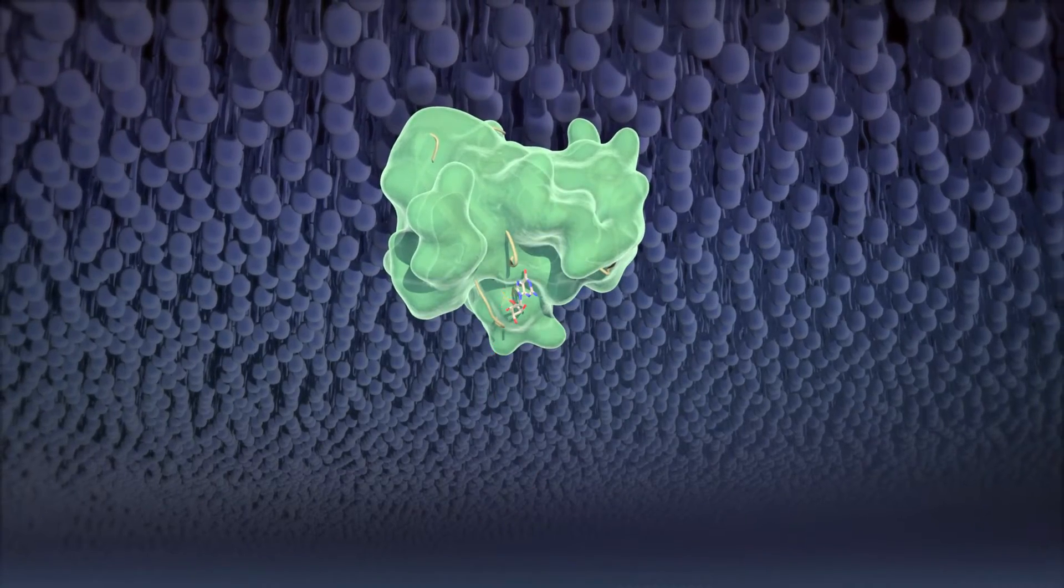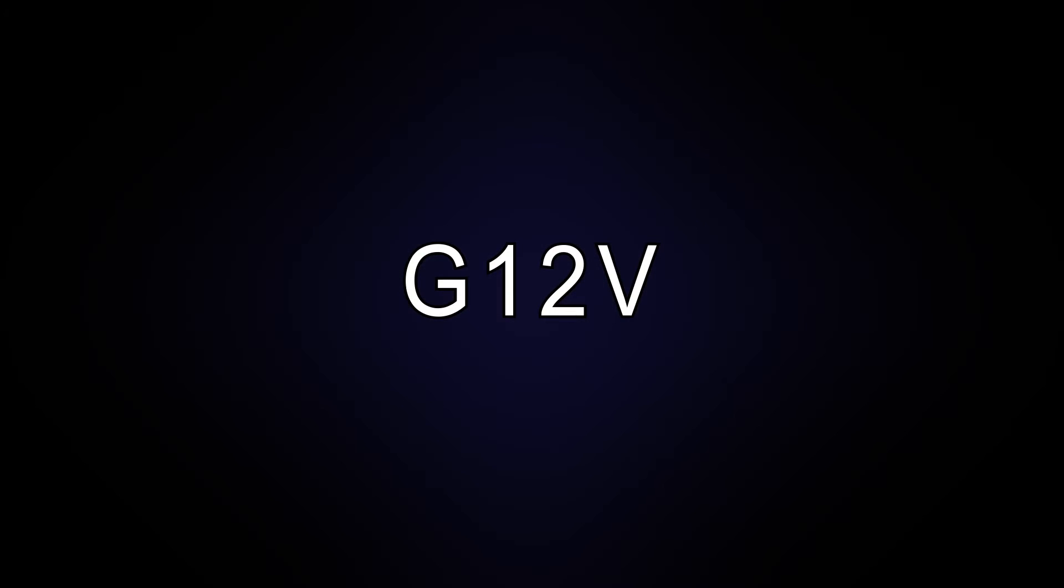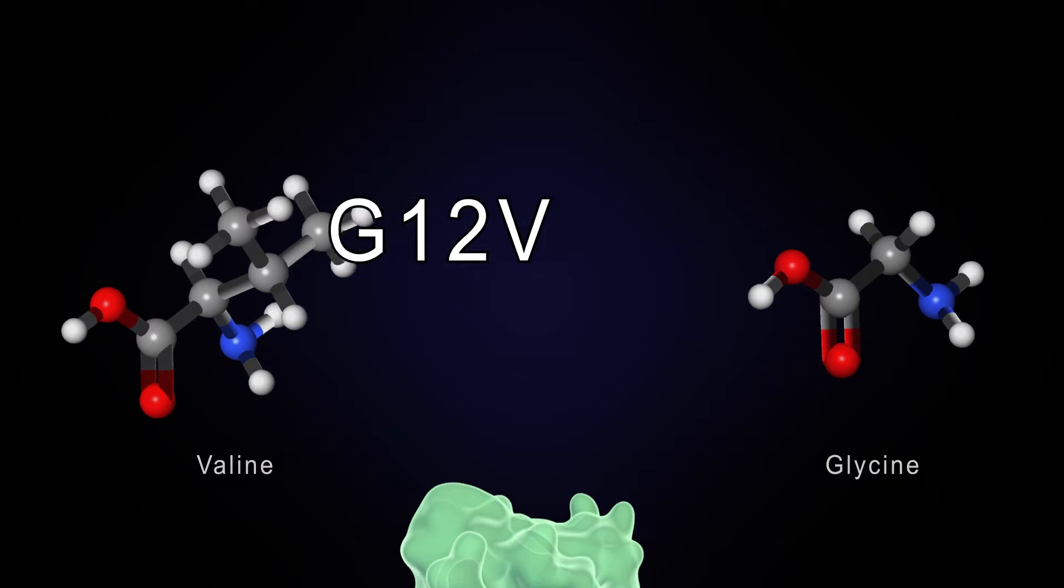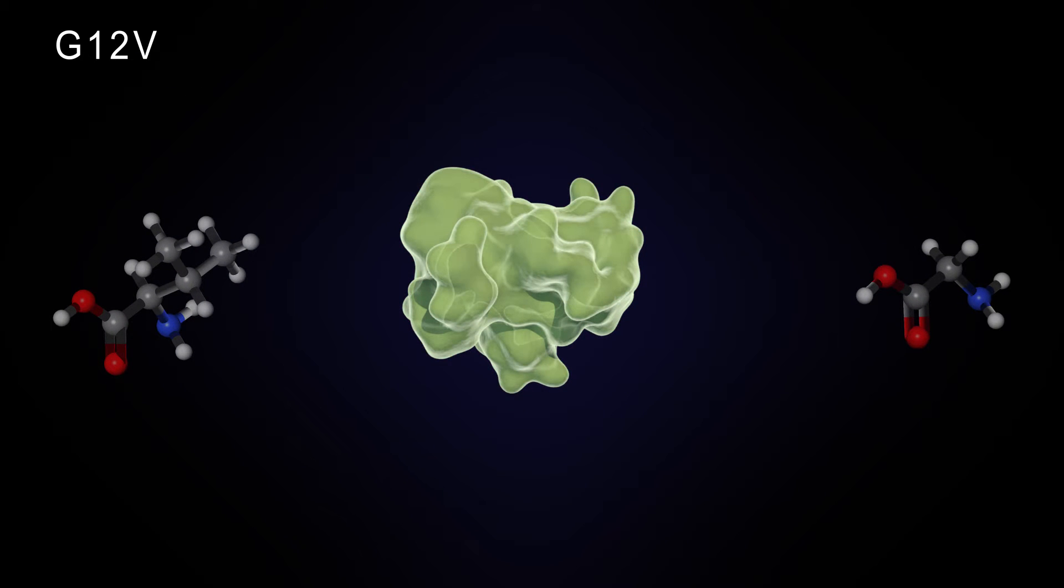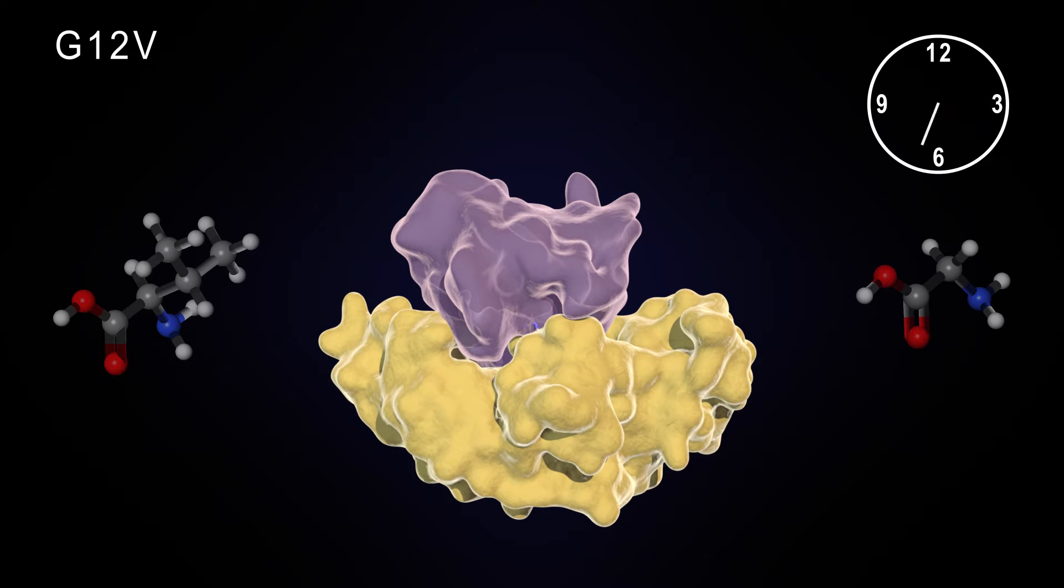One of the most common mutations in the Ras GTPases is the G12V. A valine codon replaces the normal glycine codon at position 12. This causes a structural and functional change to the normal Ras protein, causing a slower hydrolysis reaction.